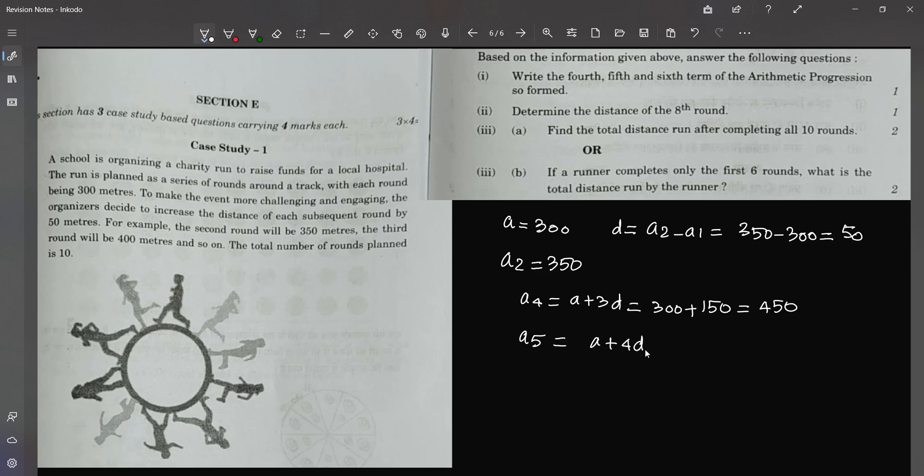So it will be 300 plus 200, so the answer will be 500. And a6 will be another 50 extra, so it has to be just 550.